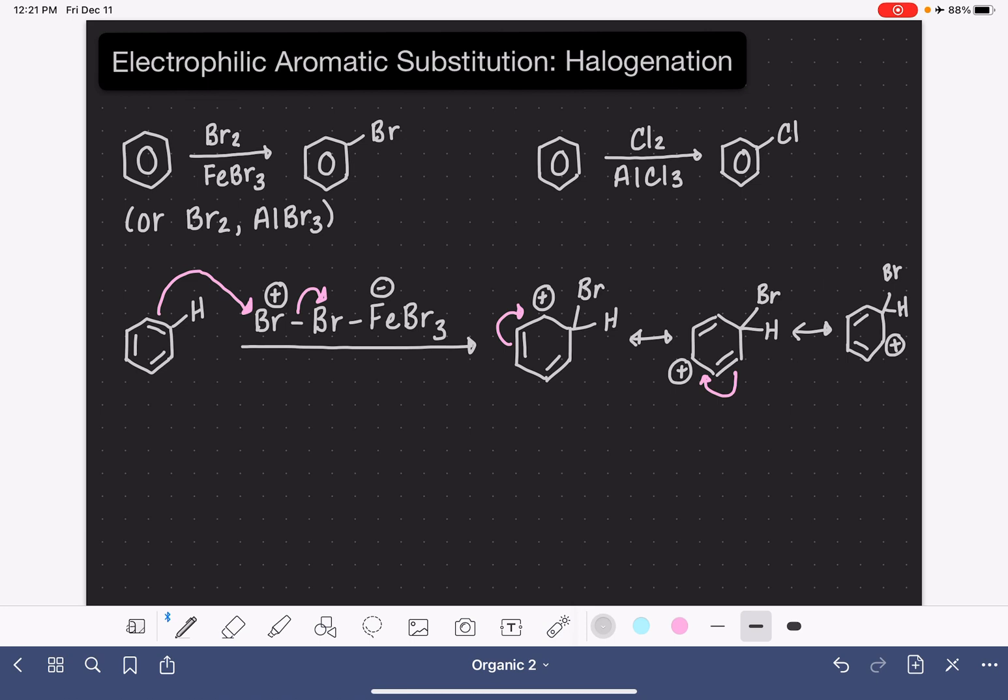In the last step of this reaction, our base comes in and abstracts the hydrogen atom from the carbon atom that the bromine was placed on. And the base in this reaction is this BrFeBr3 minus ion that was formed in the very first step.